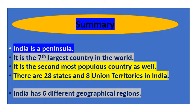Now let us summarize. India is a peninsula and the seventh largest country in the world. It is also the second most populous country. There are 28 states and 8 union territories in India, and India has 6 different geographical regions. It is located in the northern hemisphere. From south to north, mainland India extends between 8 degrees north and 37 degrees north latitude. From west to east, India extends between 68 degrees east and 97 degrees east longitude.